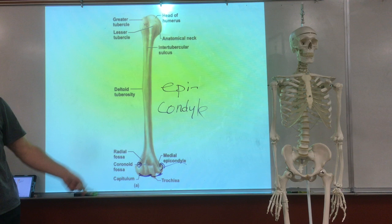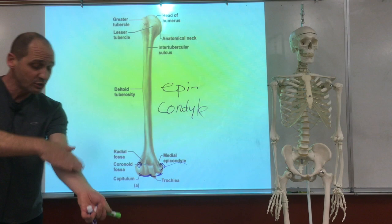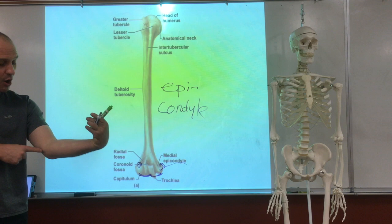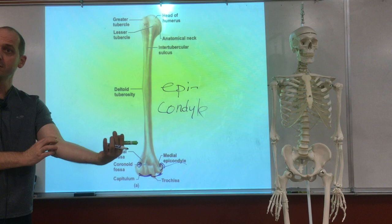A condyle always makes a joint. An epicondyle will also become attached. All the muscles on the inside — the ones that flex, that bend the wrist — they're all pretty much attached here as a common place of attachment, and they reach forward from there. We'll get to that when we do muscle.